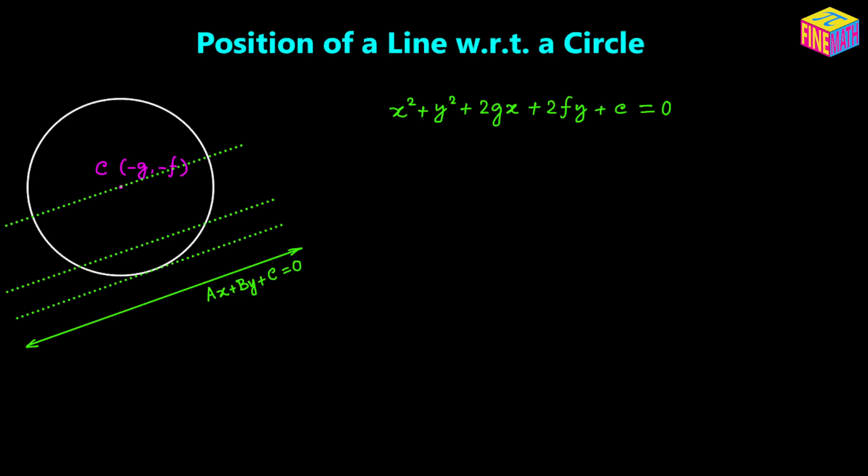Next, I am going to drop a perpendicular from the center of the circle onto the straight line, and remove the three other straight lines, keeping just the one which is outside. Now if we think about the distance of the straight line from the center, which is Cp — line segment Cp — if this distance is greater than the radius of the circle, then the straight line is actually outside of the circle.